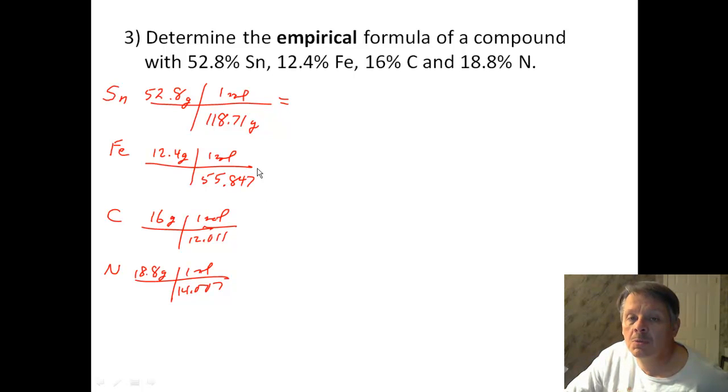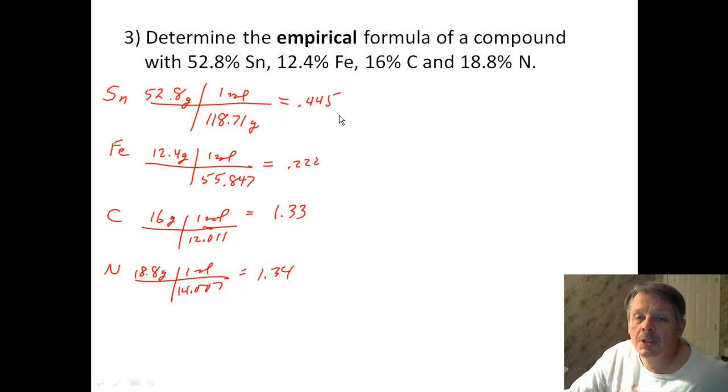I multiply, I divide all these out. And I come up with 0.445. I come up with 0.222 and 1.33 and 1.34. Well, I can look at the 0.22 and the 0.44 and say, that's a 1 to 2 ratio. But looking at the other ones, I can't do that. So I'm just going to divide all of them by 0.22, because I'm dividing by the smallest.